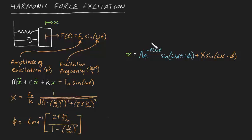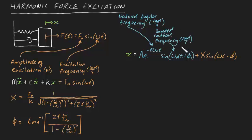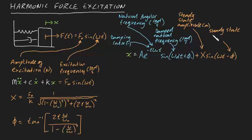In this equation, omega n is the natural angular frequency in radians per second, omega d is the damped natural frequency in radians per second as well, zeta is your damping ratio which is dimensionless, capital X is your steady state amplitude in meters, phi is your steady state phase in radians, and a and phi 1 are just constants to be determined from the initial conditions.